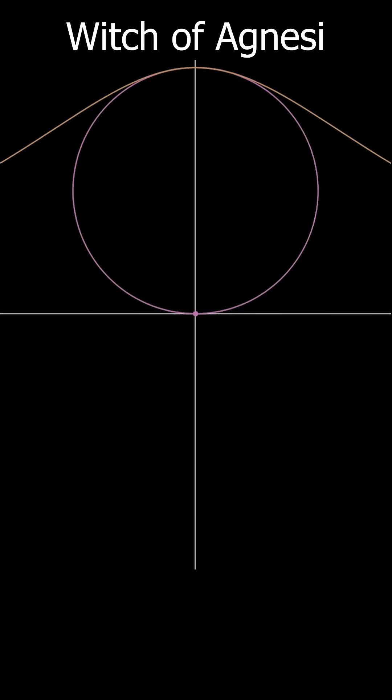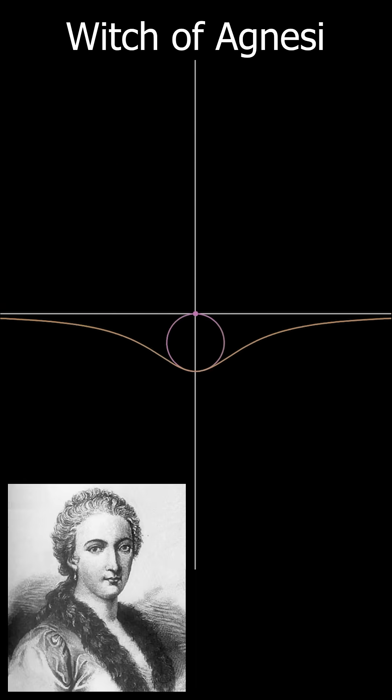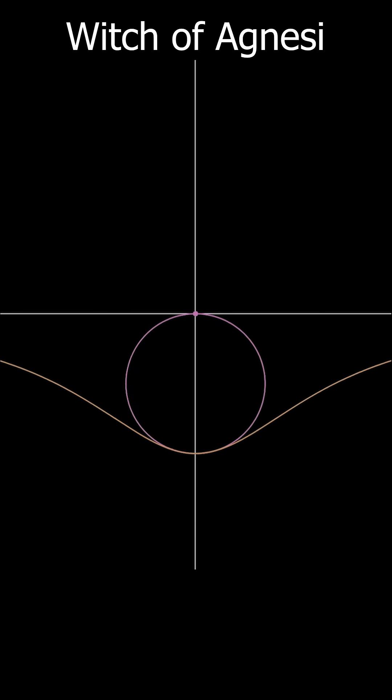The spookiest math curve is the infamous Witch of Agnesi. Originally named by Maria Agnesi, the first woman appointed as a math professor, it was then later completely mistranslated to woman who is against God and then to witch.